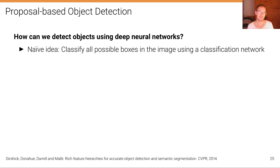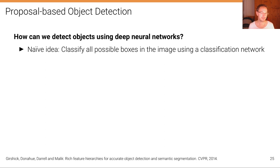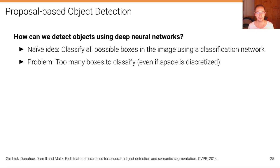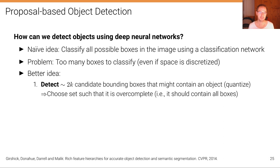How can we detect objects using deep neural networks? The naive idea is to classify all possible boxes in the image using a classification deep neural network, but that's infeasible as there are too many boxes — even if the space is discretized. A better idea is to first detect a smaller set of candidate bounding boxes that might contain an object. Not all of them are correct, but some of them are, so we are effectively quantizing the space.